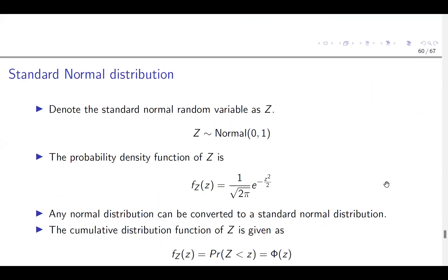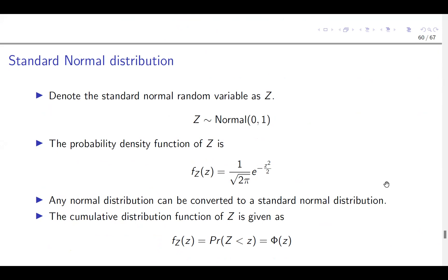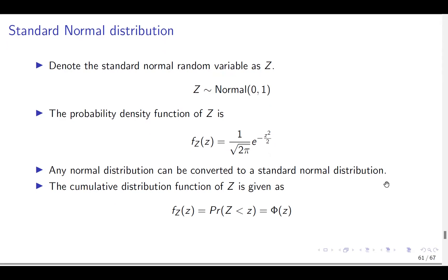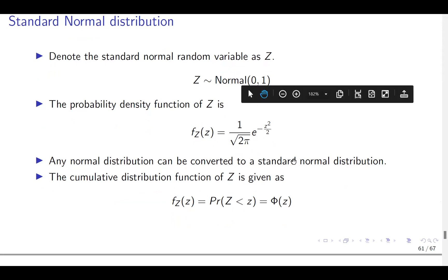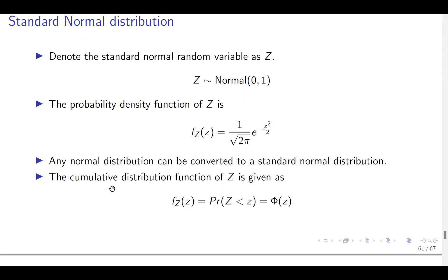We now want to talk about the standard normal distribution. We denote the standard normal random variable as Z, where Z is normal with a mean of 0 and variance of 1. The probability density function of Z is given as F of Z. Any normal distribution can be converted to a standard normal distribution. We also have the cumulative distribution function — for the normal distribution, this sums up all the probabilities of the random variable up to the limit Z. In simple form, you can write it as phi of Z, which means the probability that Z is less than or equal to z. In continuous distributions, less than or equal to mean the same thing.